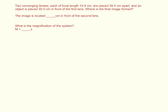Two converging lenses, each of focal length 14.9 cm, are placed 39.4 cm apart and an object is placed 30 cm in front of the first lens. Where is the final image formed, and what is the magnification of the system?